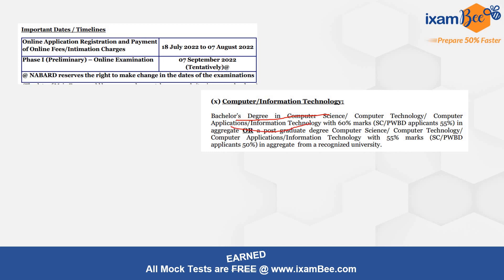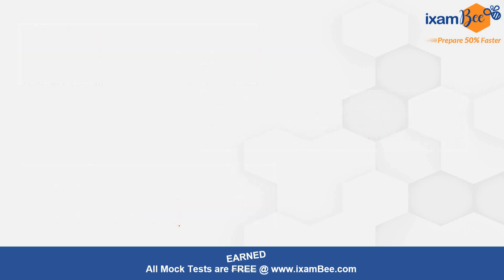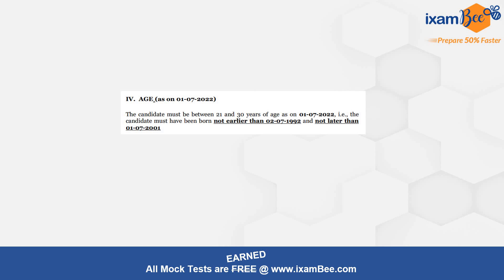You need Information Technology with 60% marks, or a postgraduate degree in any of these streams with 55% marks. For Computer Information and Technology posts, your skillset should consist of security, analytics, database administration, application development, networking, server management, and related fields — or database analysis with MySQL, Oracle, or MSSQL. Your age should be between 21 to 30 years.